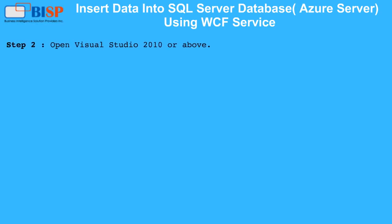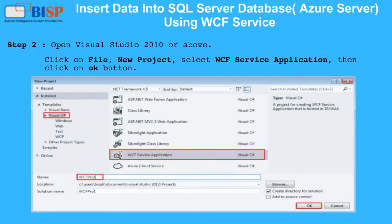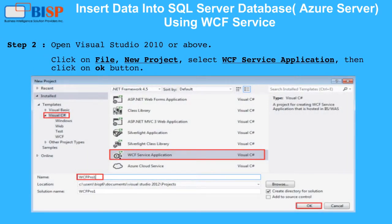Step 2: Open Visual Studio 2010 or above. Click on File, New Project, select WCF Service Application, then click the OK button.